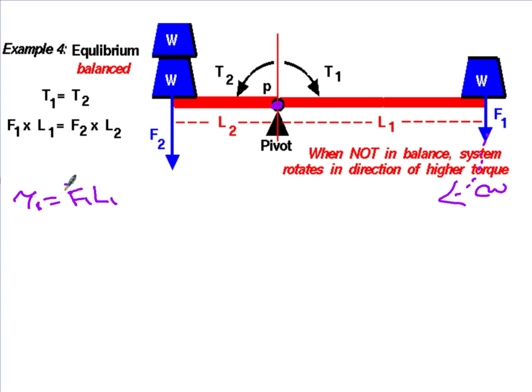The torque due to F1 is going to be F1 times L1, and it's negative. The torque due to the second set of weights is going to be F2L2, and this torque is causing a counterclockwise rotation, so this is going to be positive. There are two ways you can do this.